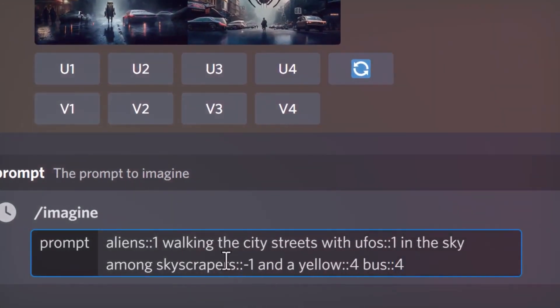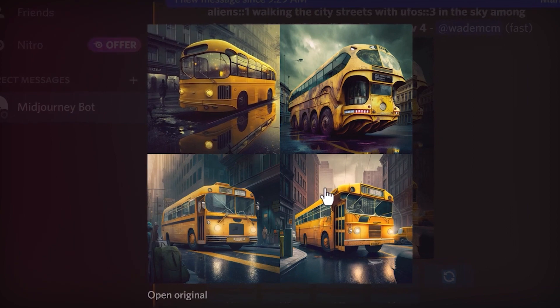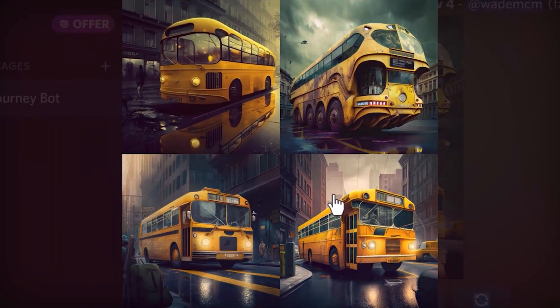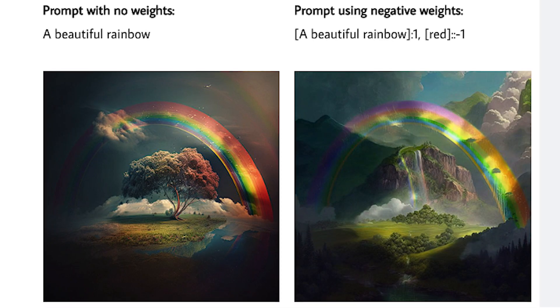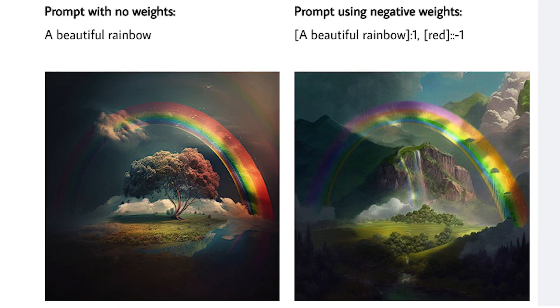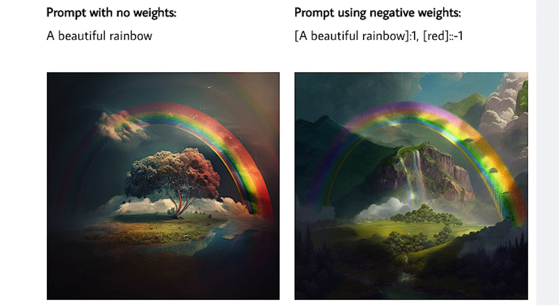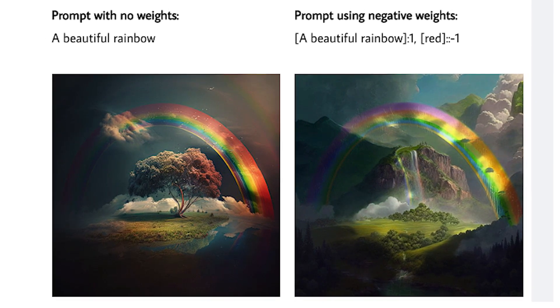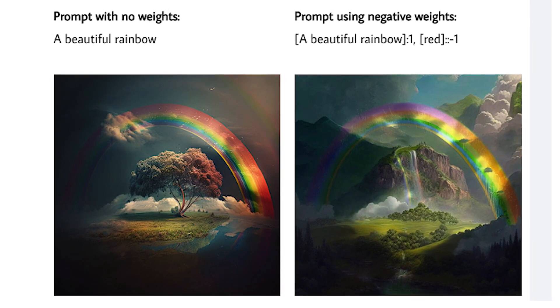In the same way, we can use negative weights to reduce the prominence of certain elements or even remove them from the generated image. For example, prompt with no weights: 'a beautiful rainbow'. Prompting with negative weights: 'a beautiful rainbow::1, red::-1' removes the color red from the rainbow.